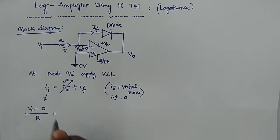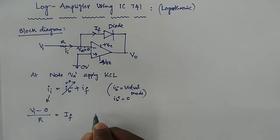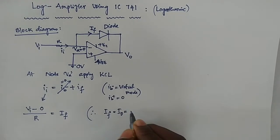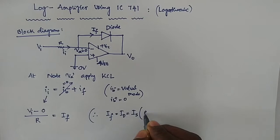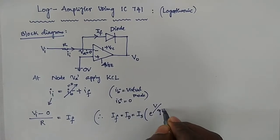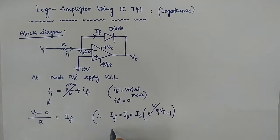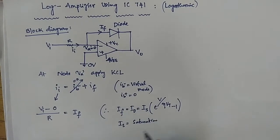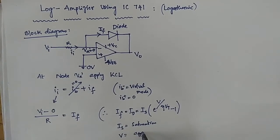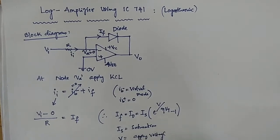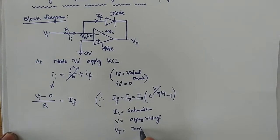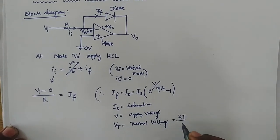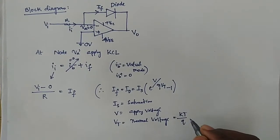The diode current equation is represented as IF, where IF equals ID — the diode current. That equals IS times e to the power of (V divided by Eta·VT) minus 1. Here IS is the saturation current, V is the applied voltage across the diode, and VT is the thermal voltage.